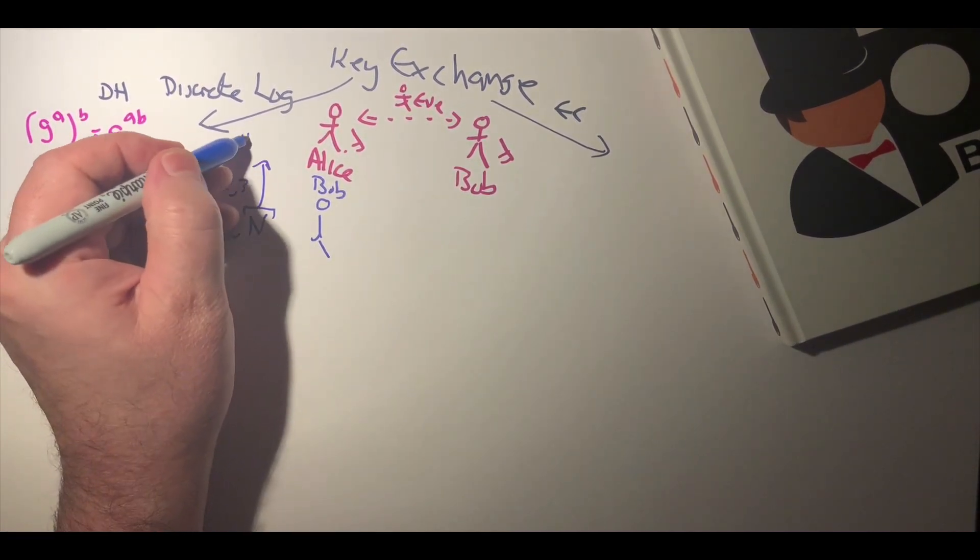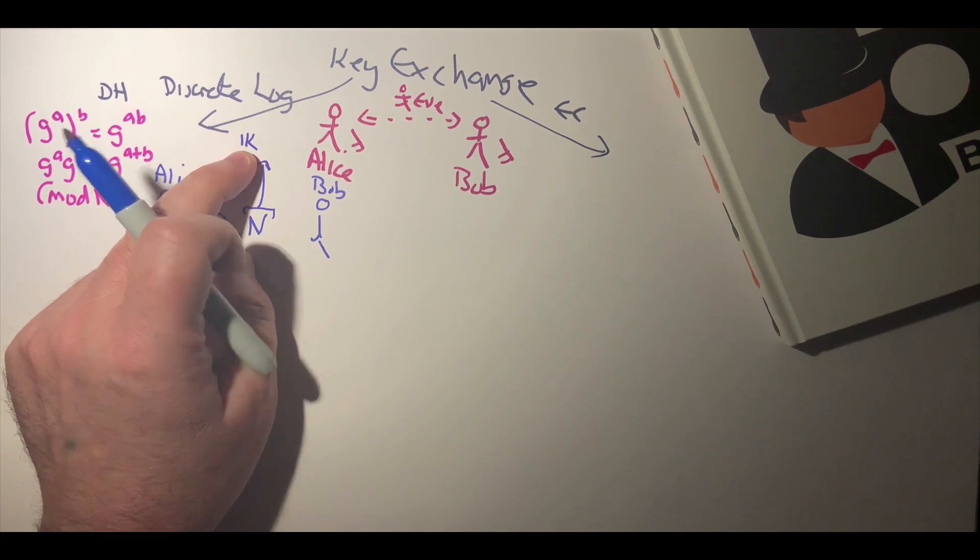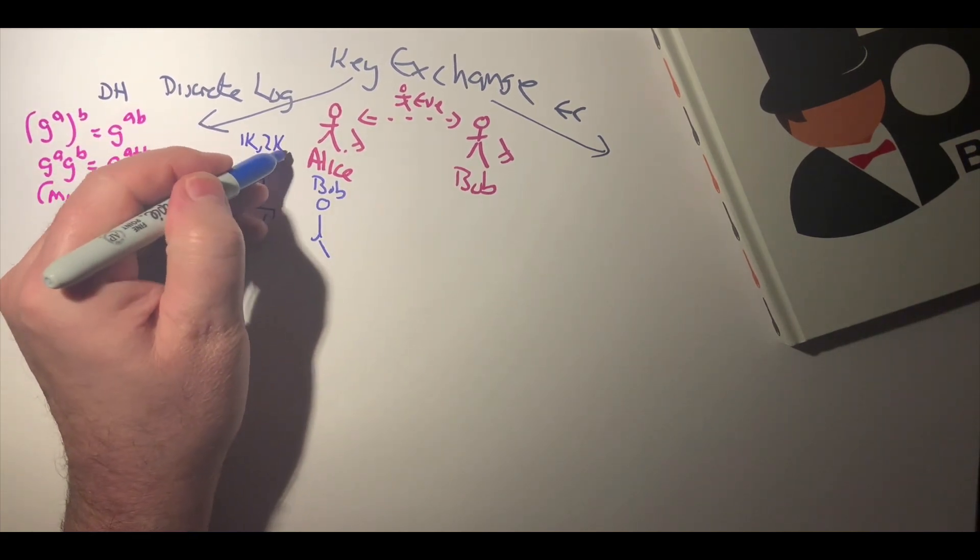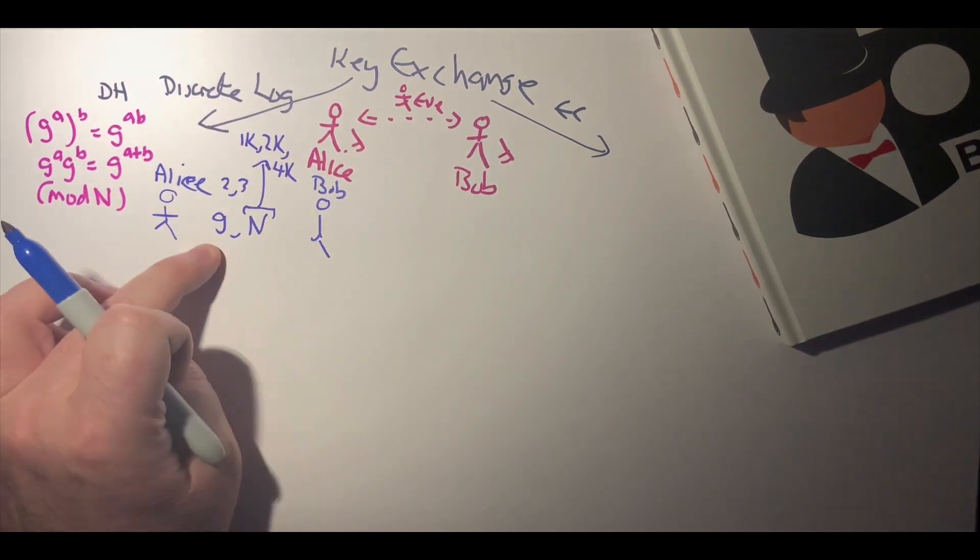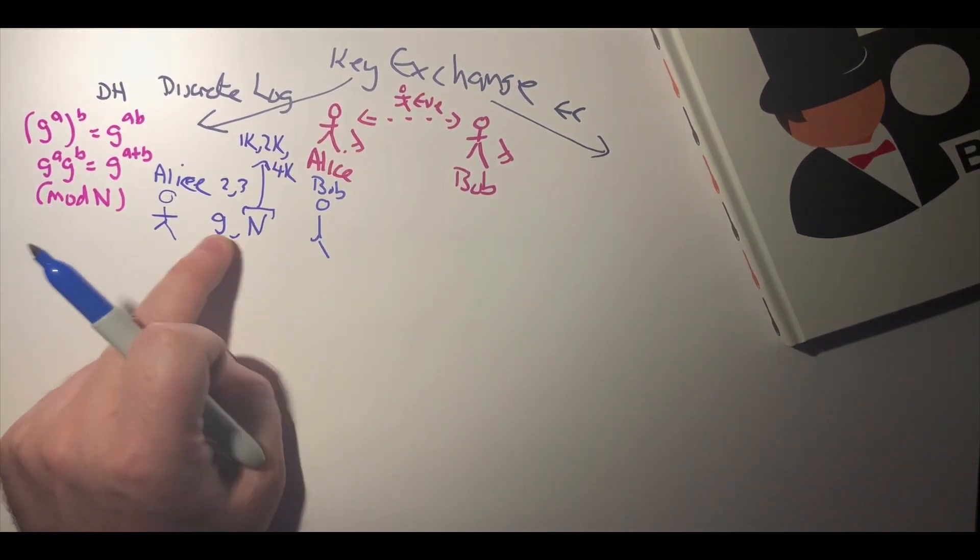Typically these days that's at least one thousand bits, could be two thousand, and it could even be four thousand bits long for the prime number.